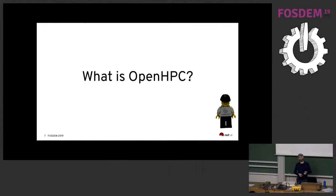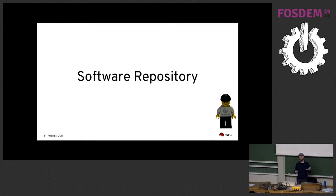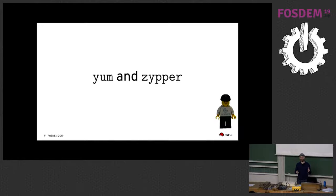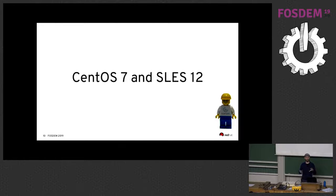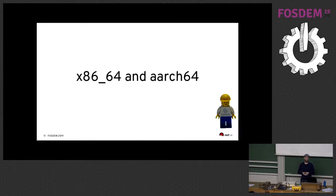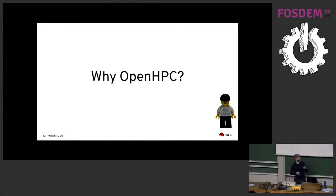When I first looked at OpenHPC, I saw it's a software repository — you can download RPMs, and you can download it through zypper, which means it's for SLES 12 and CentOS 7. Those are the two platforms OpenHPC currently supports. It supports the architectures x86_64 and ARM64. That's sort of the first thing you see when you look at OpenHPC.